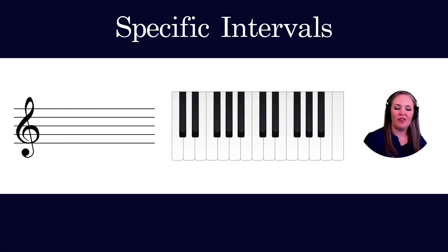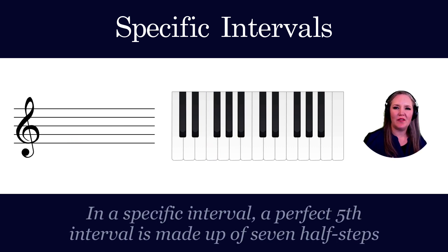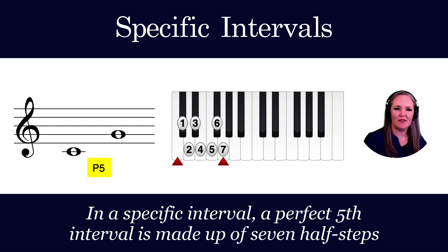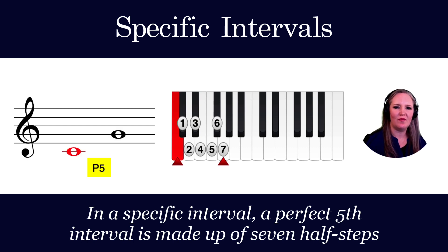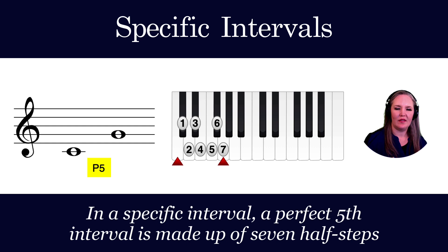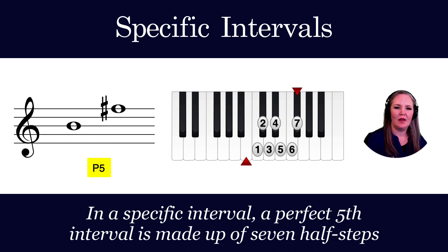A perfect fifth is made up of seven half steps. So C to G is a perfect fifth. B to F-sharp is also a perfect fifth.